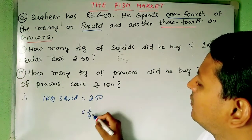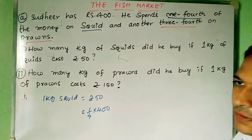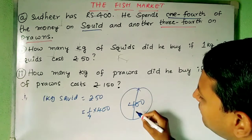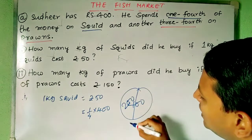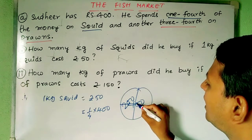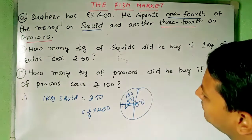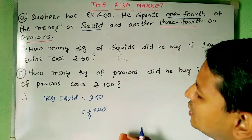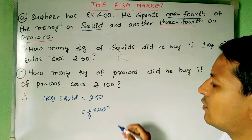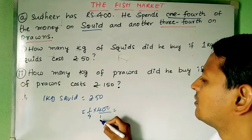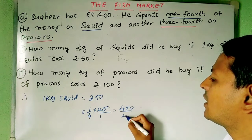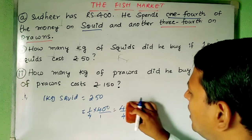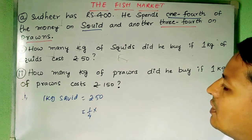He is spending one fourth of 400. The whole is 400; half of it is 200. Half of half is 100. So the quarter of 400 is 100. You can also calculate it as: 1/4 × 400 = 400 ÷ 4 = 100 rupees. So he is spending 100 rupees on buying squid.